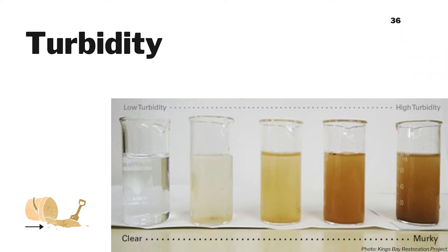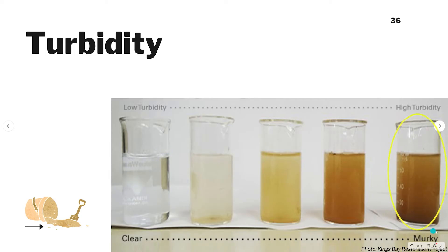So what is turbidity? Take a look at the glass of water on the left — we can see through the water because it isn't cloudy. Now take a look at the glass on the right. We can't really see through it at all because it's clouded with tiny materials, in this case sediment, that don't let any light pass through.